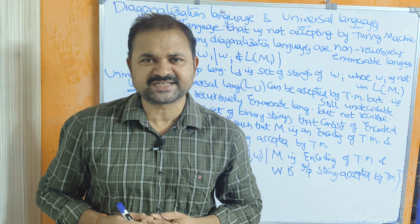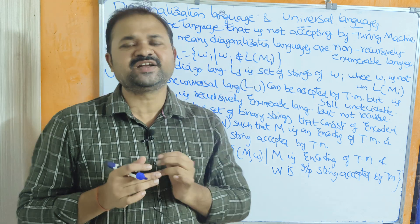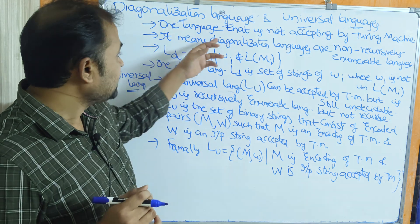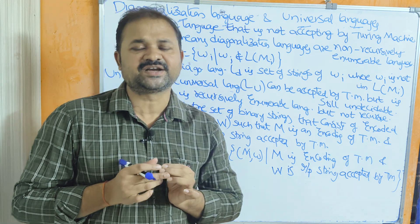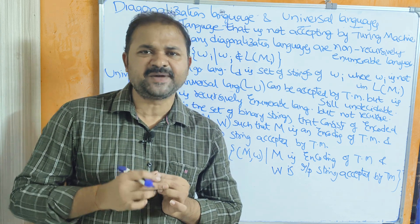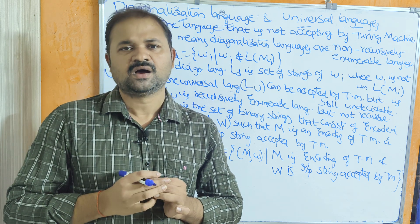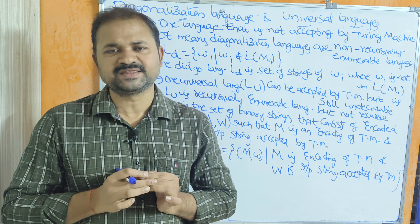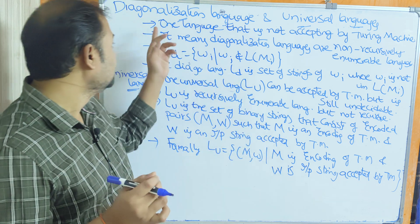In this video we are going to discuss diagonalization languages and universal languages. The language that is not accepted by a Turing machine is called a diagonalization language. We know that the language accepted by a Turing machine is called a recursively enumerable language, whereas the language not accepted by a Turing machine is called a diagonalization language.